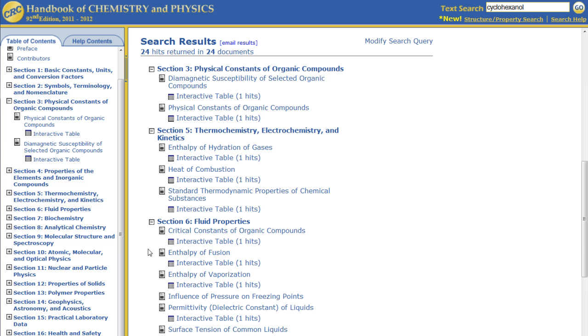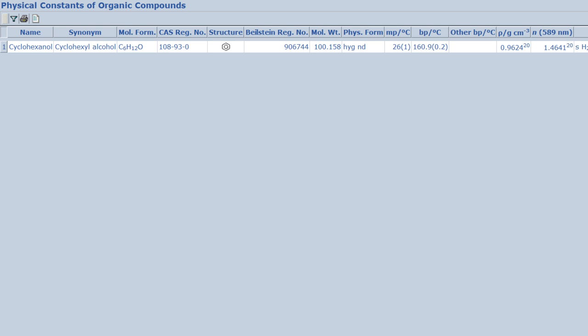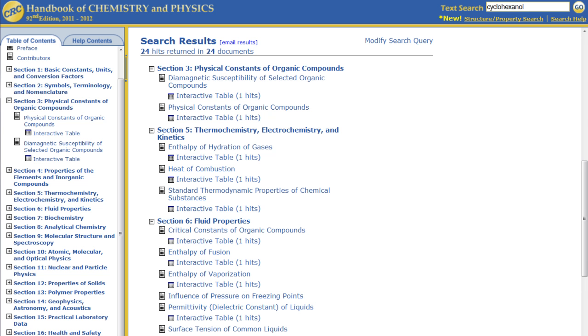Just as with the text search, the results page will show you which sections of the handbook contain information about the substance. Again, you can click on an interactive table to display only the portion of it that is relevant to your search.